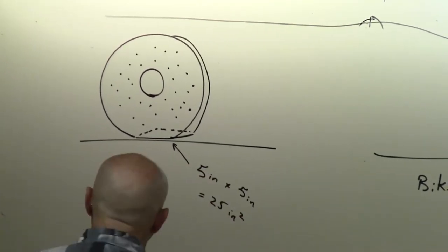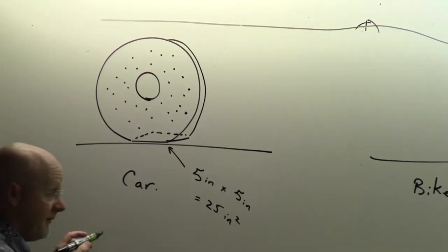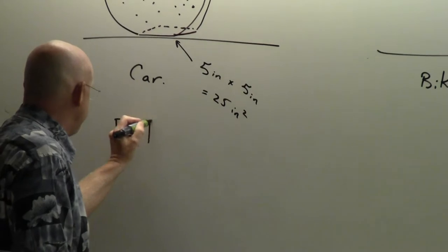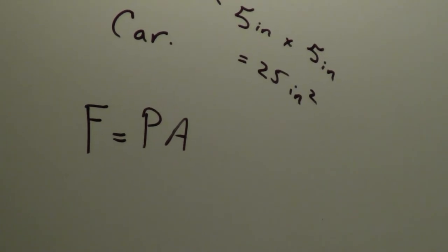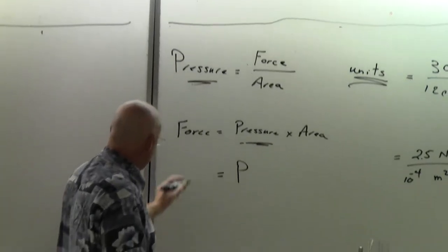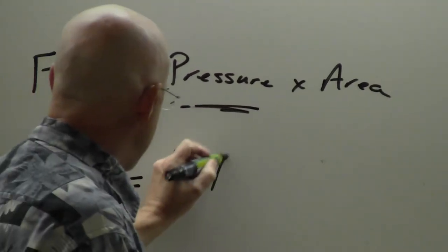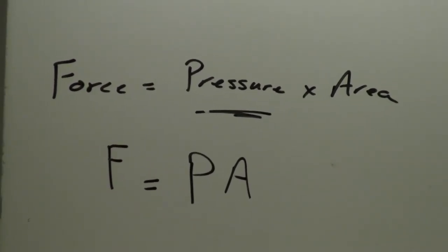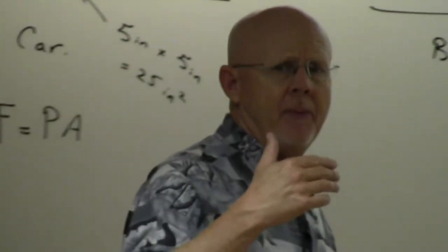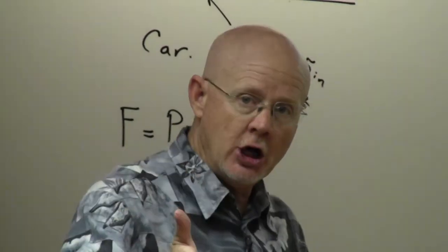I can even tell you the weight of my car from this information. Using the equation: pressure P times area A gives force F. The answer to why I pump my bike tire to 100 PSI but my car tires to only 35 PSI is: for my car tires, I take 35 pounds for every square inch, but I have a lot of square inches lifting the car — 25 square inches from one tire and four tires total.